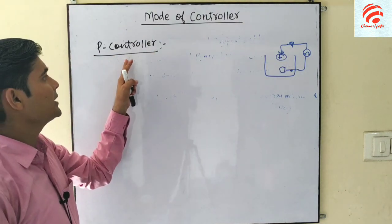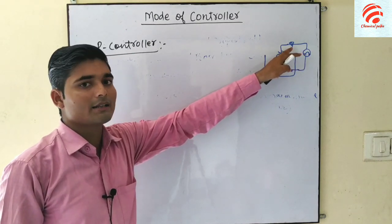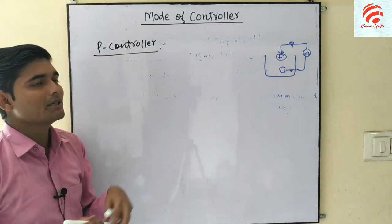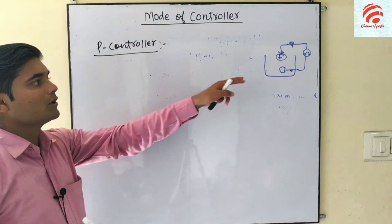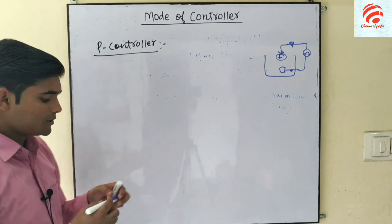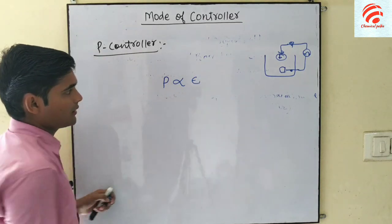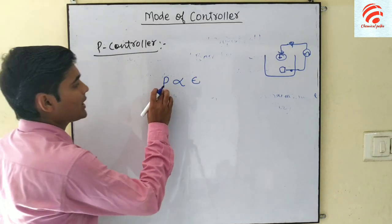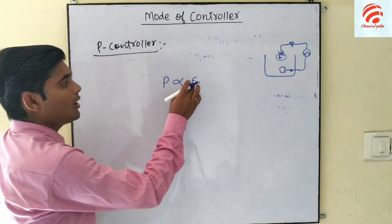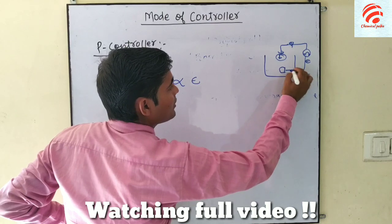We can see the controller here. (Hindi: Subscribe karte hain, proportional ke baare mein dekhenge.) For the proportional controller, we have a controller output signal, a set point, a measuring variable, and an error.